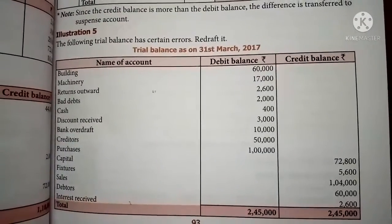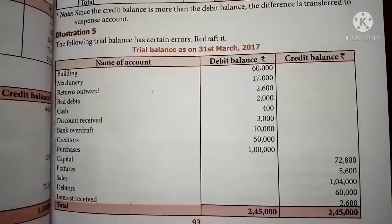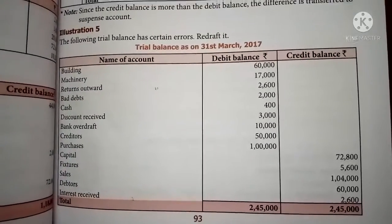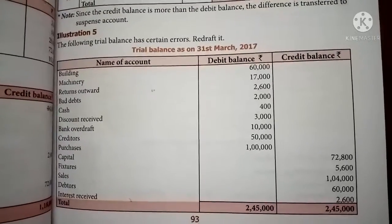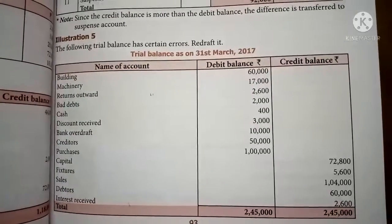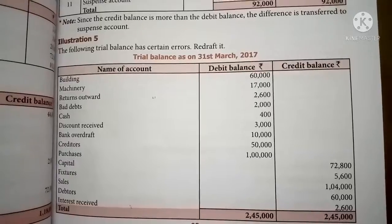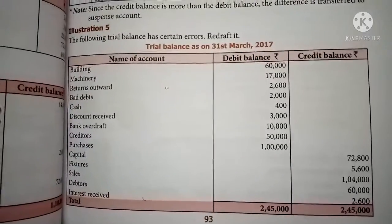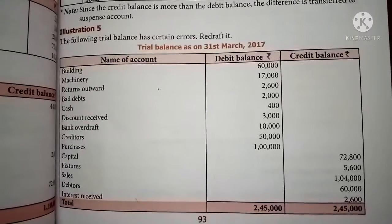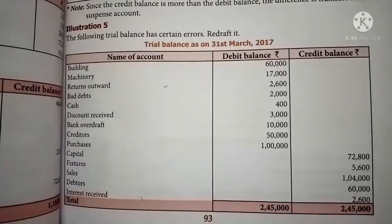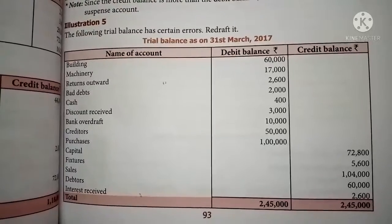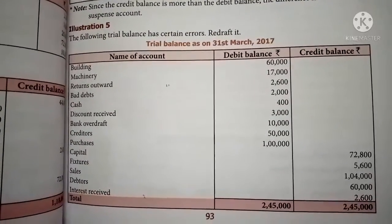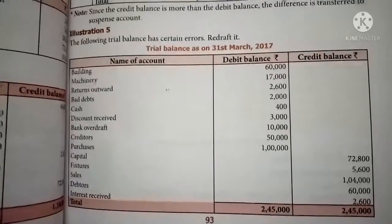Purchases, 1,000 — it is one of the payments and is correctly written in the debit column. Capital is a financial obligation and a liability — it is shown in the credit column, which is right. 7,800 is correctly written in the credit column. Fixtures is one of the property items — it should be shown on the debit column, but it is written in the credit column, which is wrong. So write the 5,600 in the debit column.